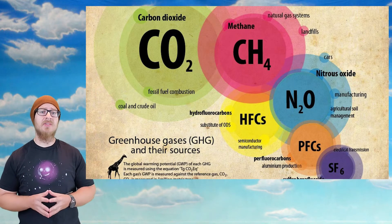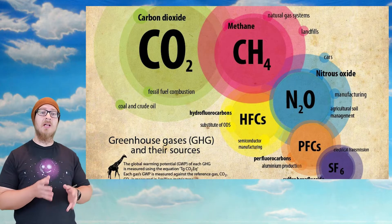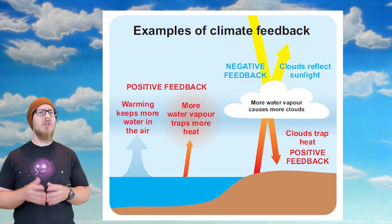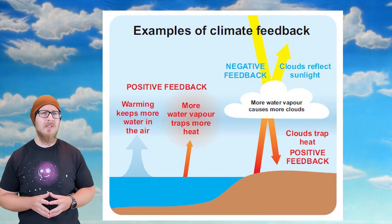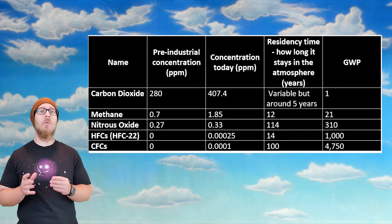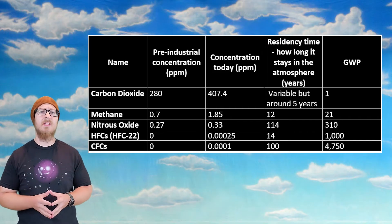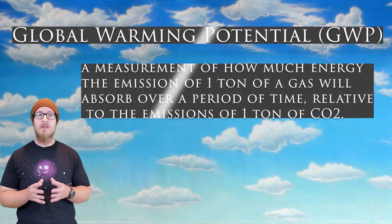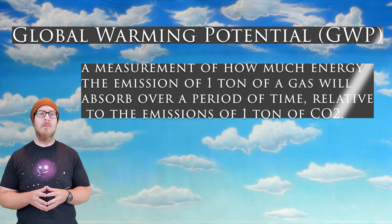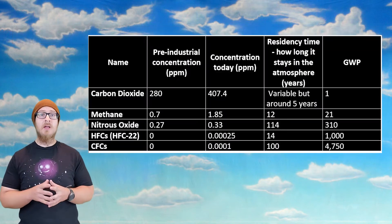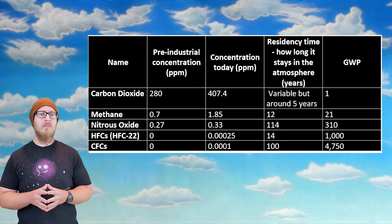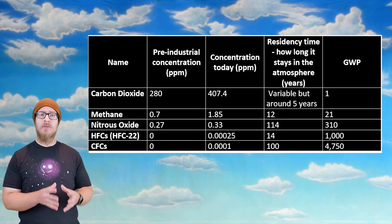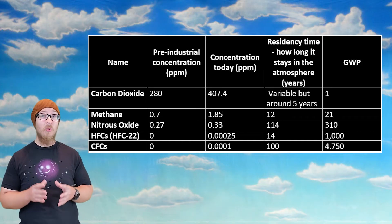The most impactful greenhouse gases are carbon dioxide, methane, water vapor, nitrous oxide, and chlorofluorocarbons, or CFCs. Water vapor, despite being a greenhouse gas, doesn't actually contribute much to climate change because it has a short residency in the atmosphere. Carbon dioxide is our reference frame for comparing the relative global warming potential of other gases on the GWP scale, which measures how much energy the emission of one ton of a gas will absorb over a period of time relative to one ton of CO2. Methane has a GWP of 21, nitrous oxide has a GWP of 310, and CFCs have a GWP of 4,750.